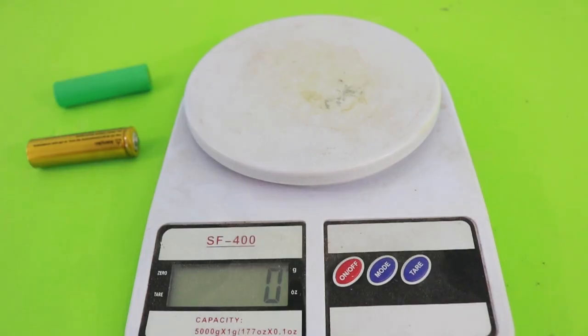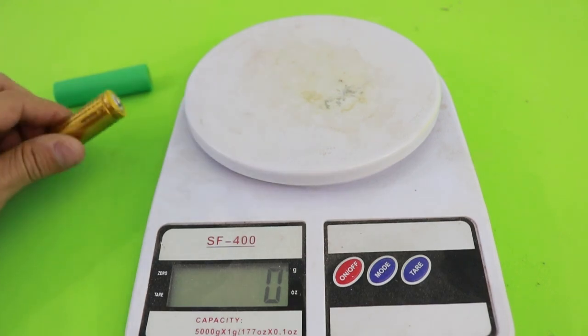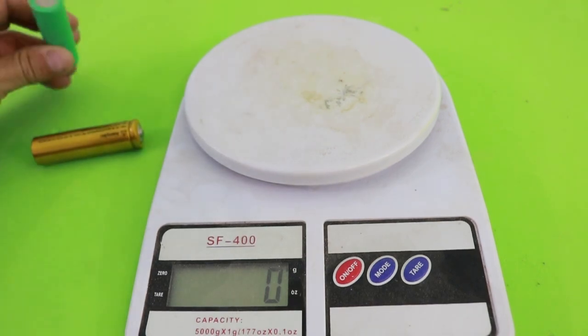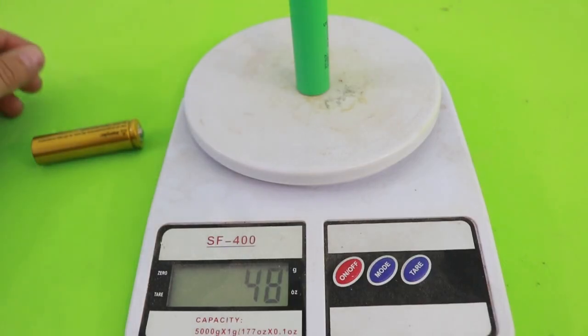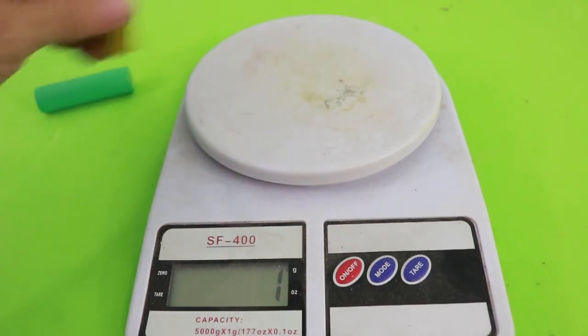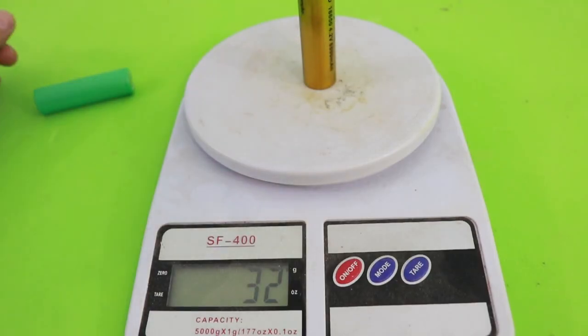The first clue that this is a fake battery is the weight. We can see that the Samsung battery is 47 grams while the Chinese weighs only 32-31 grams.